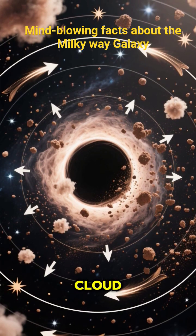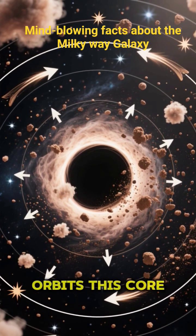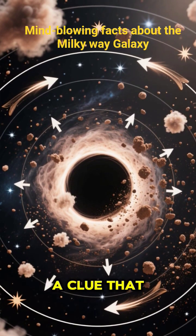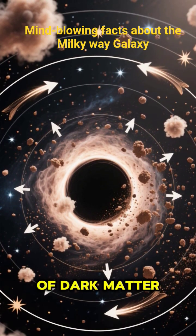Every star, gas cloud, and dust particle in the Milky Way orbits this core at about 220 kilometers per second, a clue that a huge halo of dark matter surrounds us.